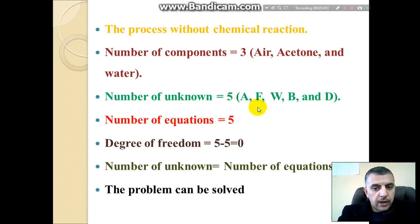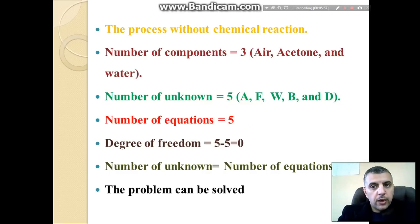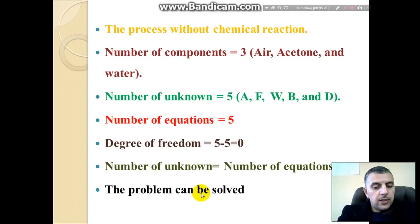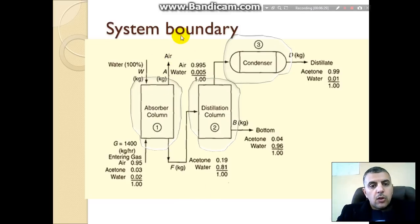The number of components is three: air, acetone, and water. The number of unknowns is five: A, F, W, B, and D. The number of equations also equals five — three from the absorber column (one each for acetone, air, and water) and two from the distillation column (one for acetone, one for water). Therefore, the degree of freedom equals zero and the problem can be solved.